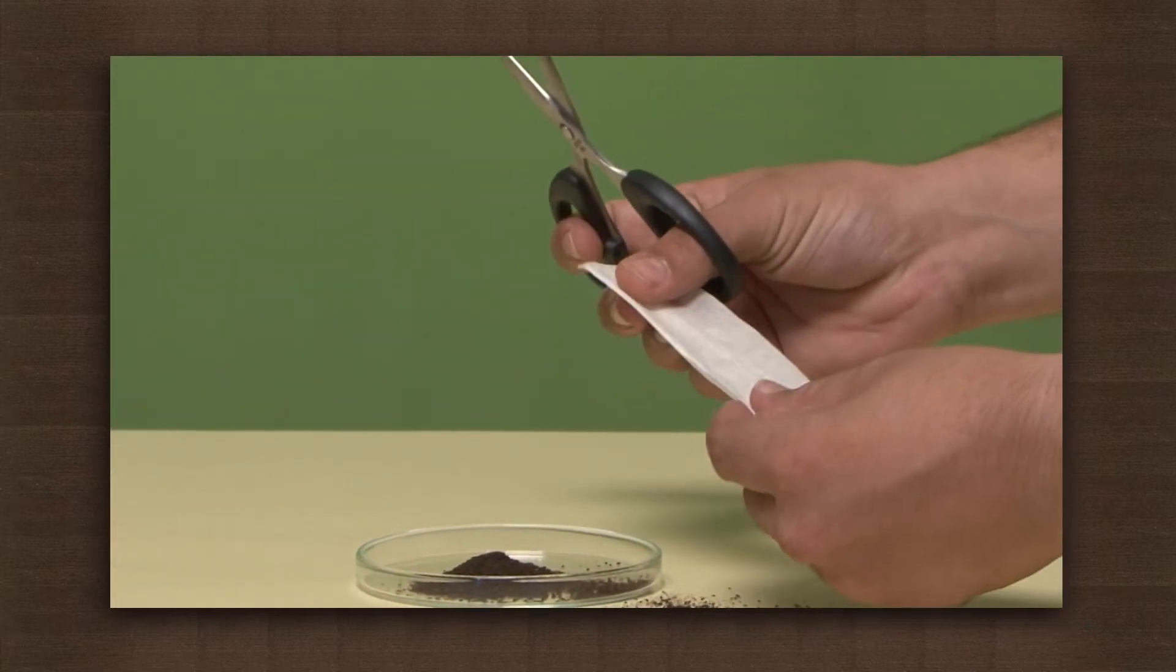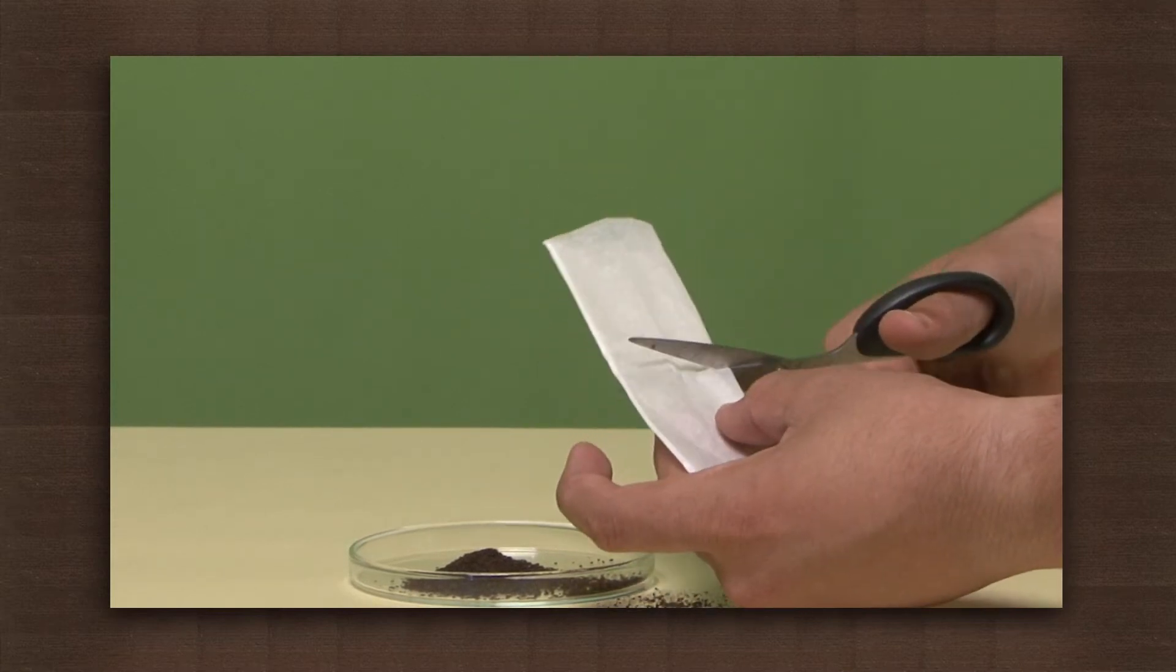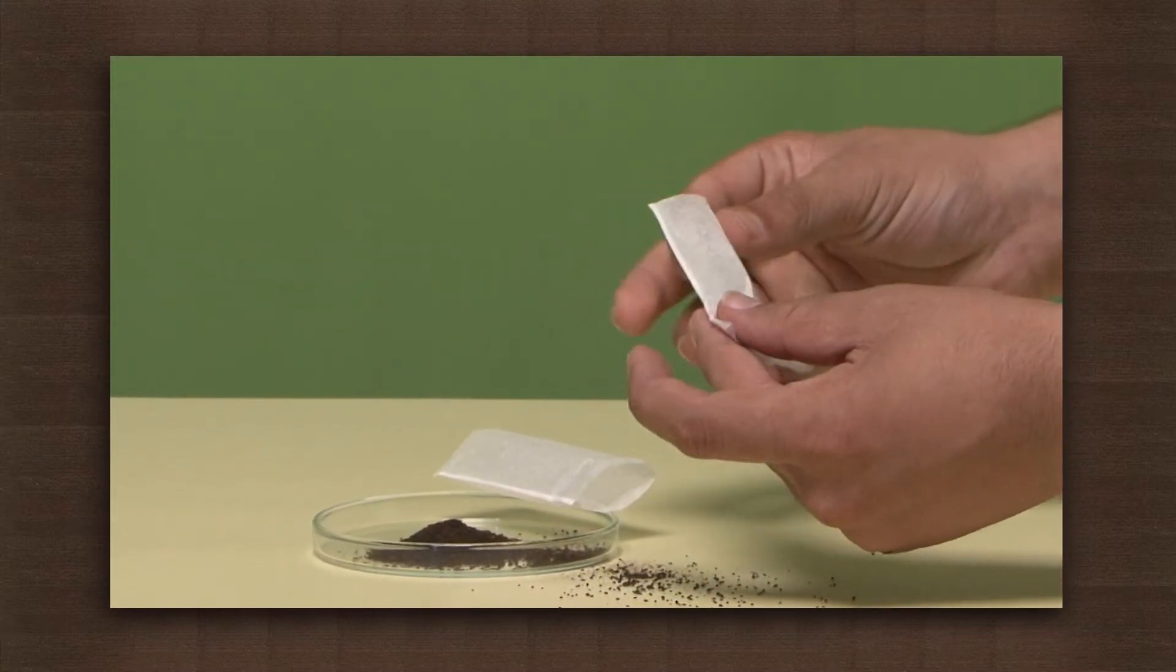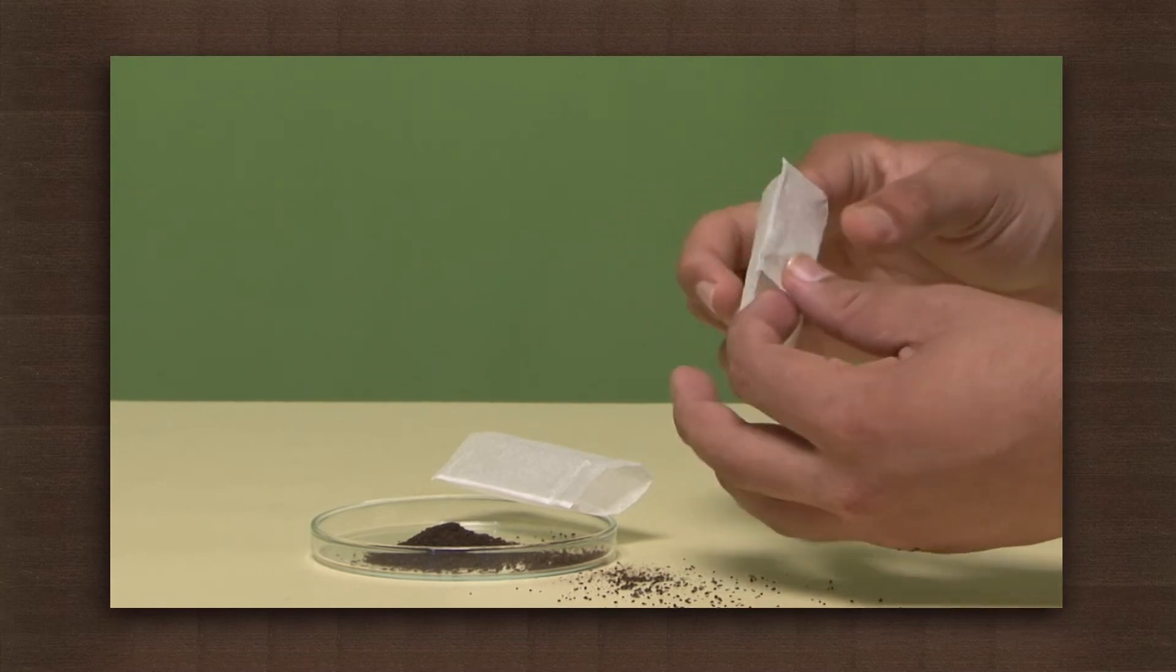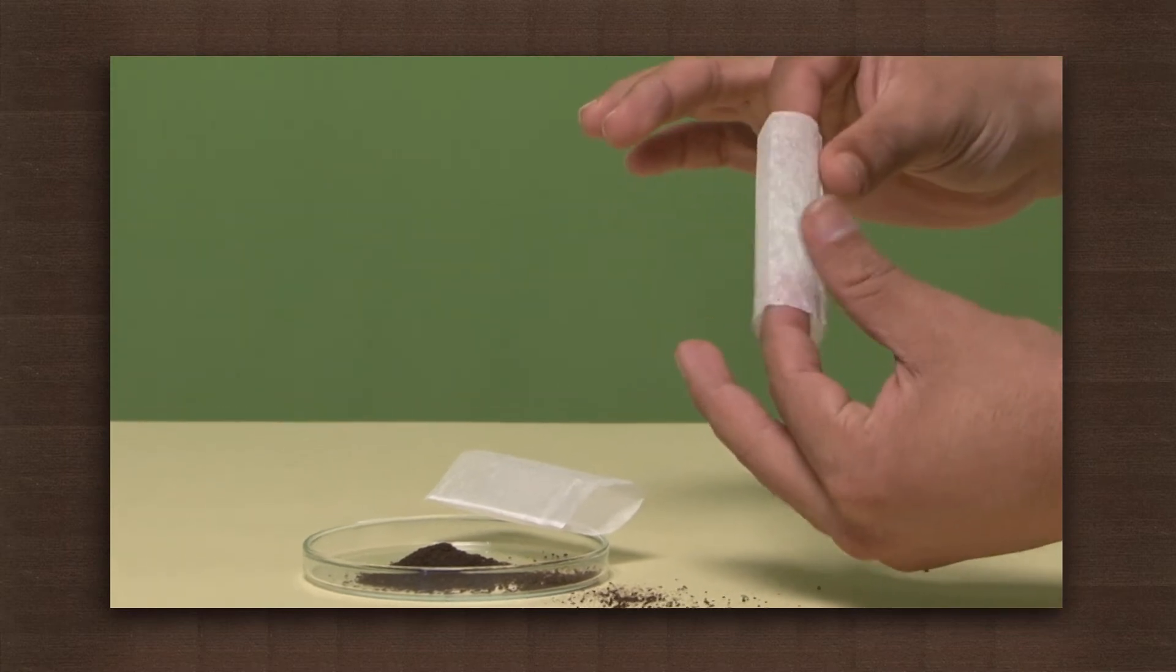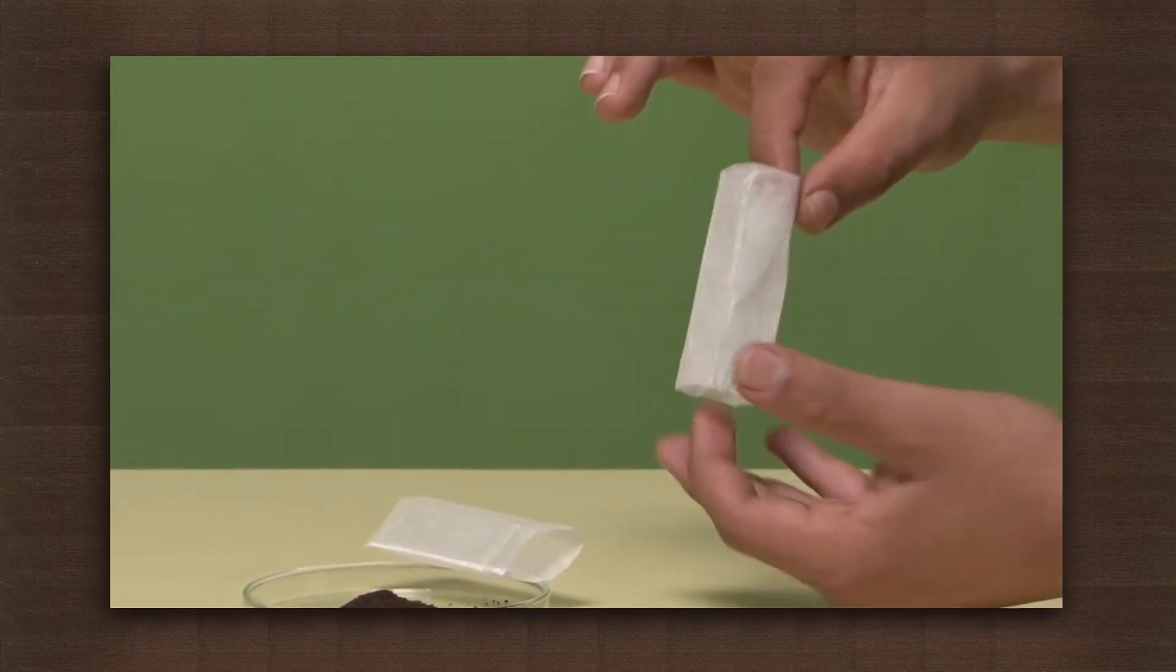Now cut the tea bag into half. Unfold one part to make a shape of a cylinder. Now make this part stand at the center of the table.